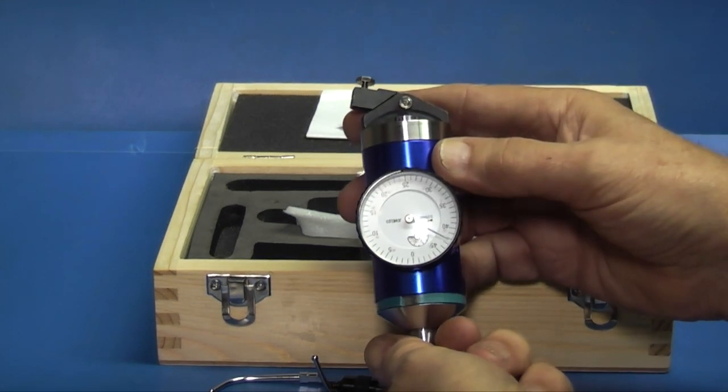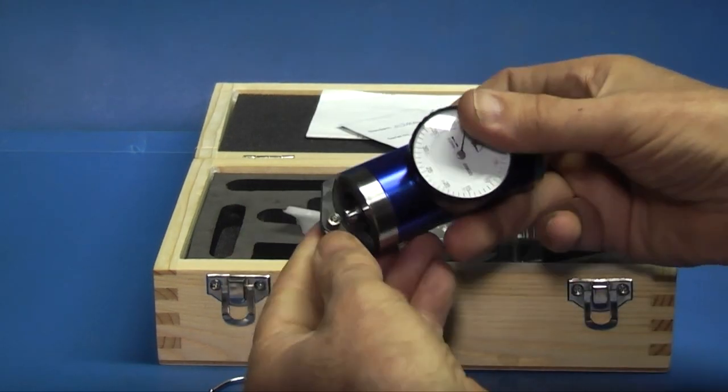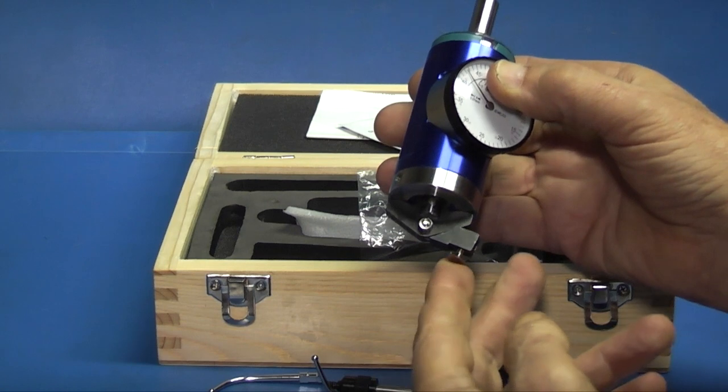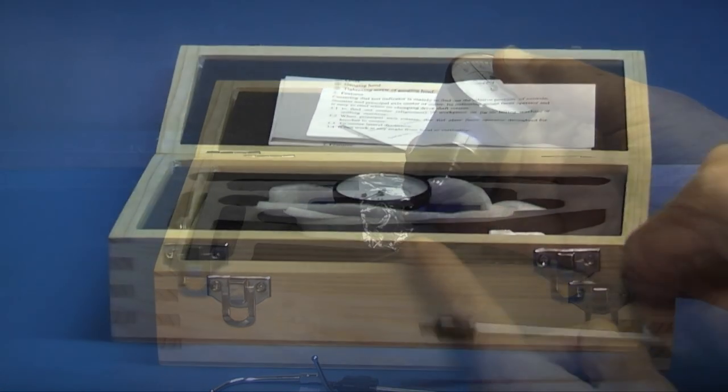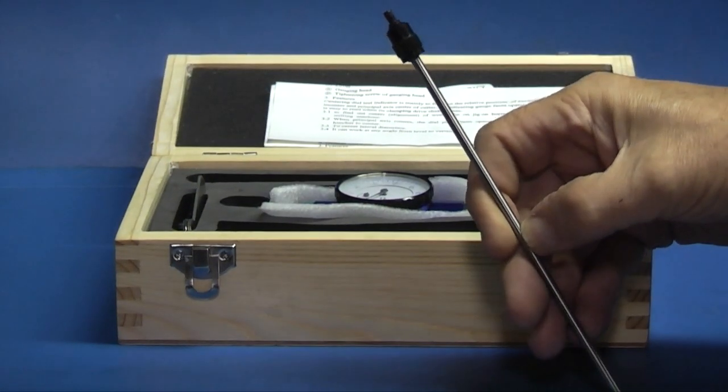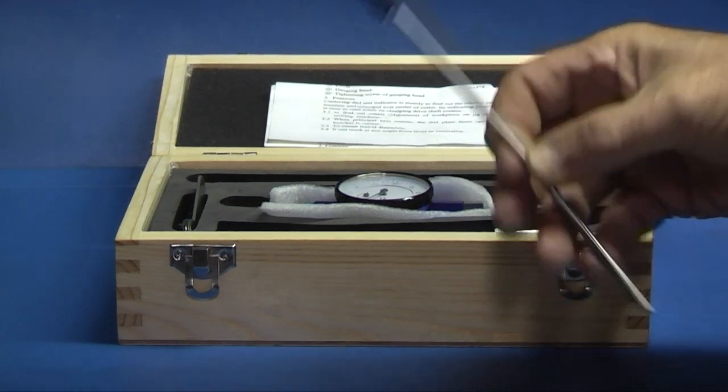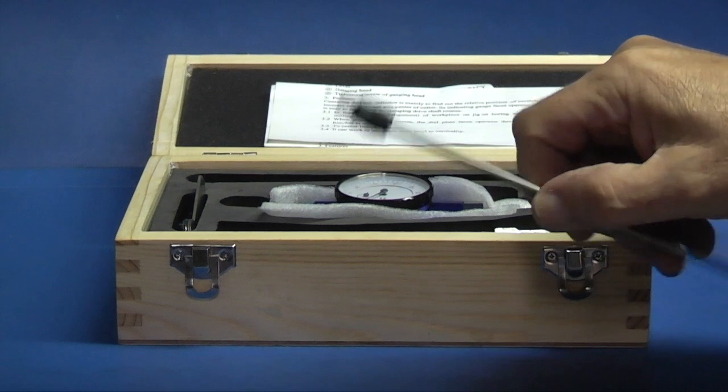And this is the main body of the centering indicator. And the last thing we have is this rod which fits in the side of the indicator and stops it turning when the machine's running.